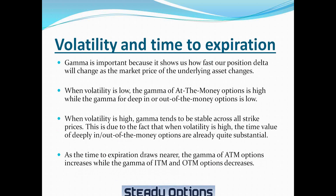When volatility is high, gamma tends to be stable across all strike prices. This is due to the fact that when volatility is high, the time value of deep in or out of the money options is already quite substantial. And the increase in the time value of those options as they go near the money will be less dramatic, and hence the low and stable gamma.